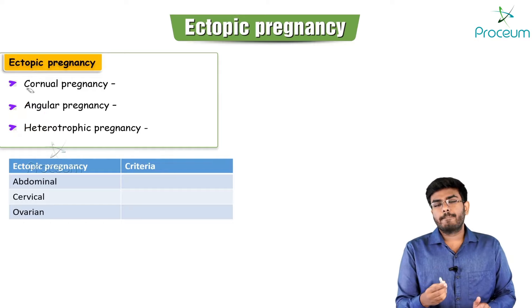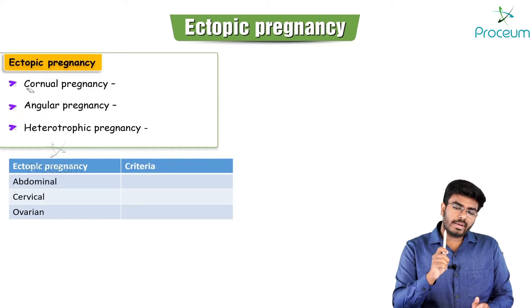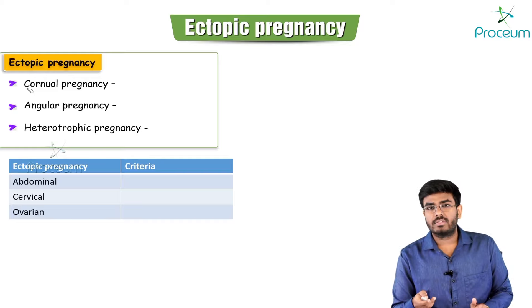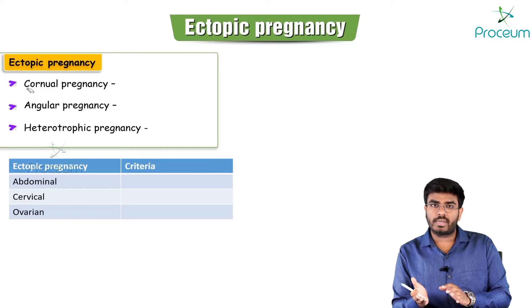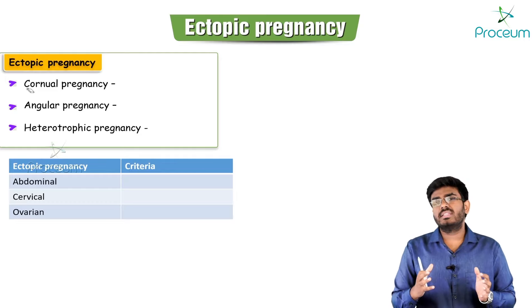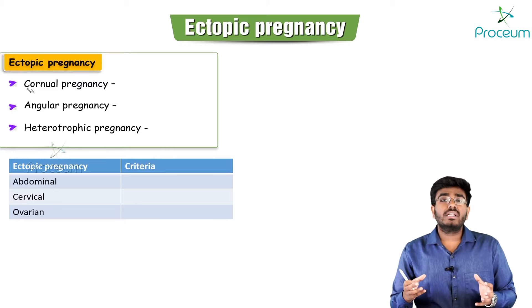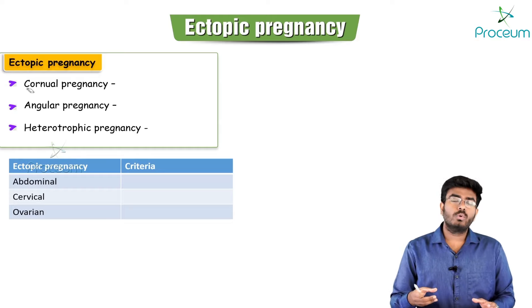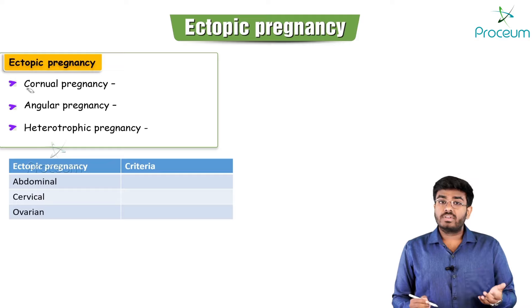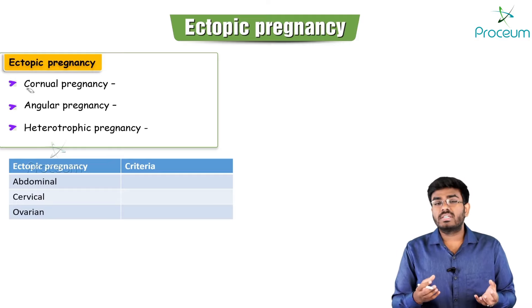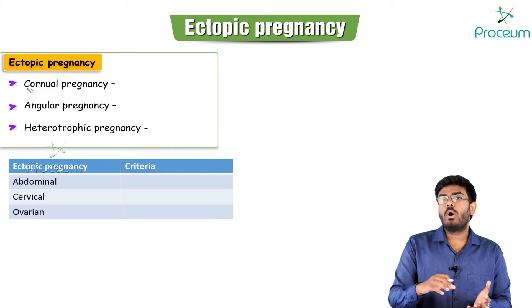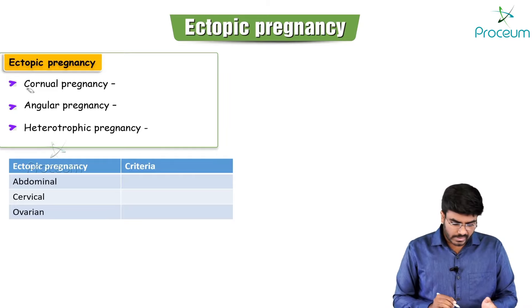Heterotopic pregnancy means one pregnancy happening inside the uterine cavity and another happening outside — a combination of intrauterine and ectopic pregnancy. These are usually caused by assisted reproductive methods like in vitro fertilization, where multiple embryos are released: one implants in the uterine cavity and one lodges in the fallopian tube.